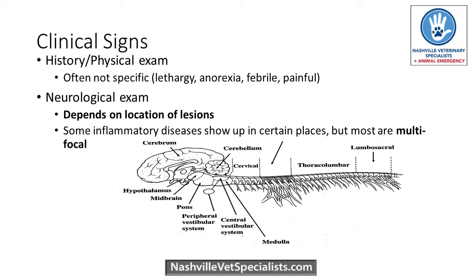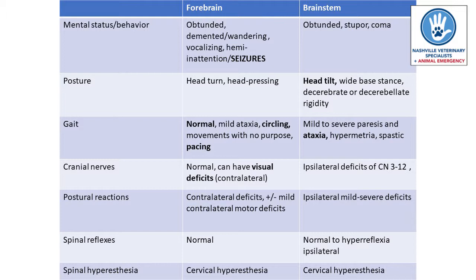When dealing with intracranial diseases, we break it down into two main areas: the forebrain, basically the cerebrum, and the brainstem. Forebrain lesions typically present with a fairly normal gait, possible proprioceptive deficits, circling, demented mentation, and seizures. Signs that localize to the brainstem include a head tilt and significant ataxia. If an animal comes in with seizures but also has a head tilt or is significantly ataxic, then you have a multifocal localization.